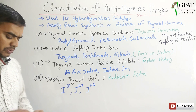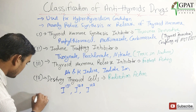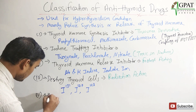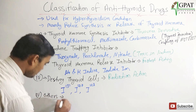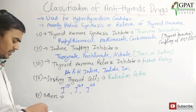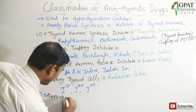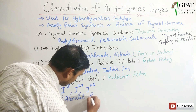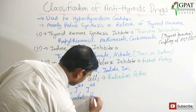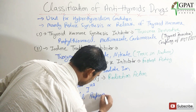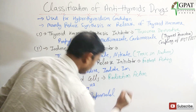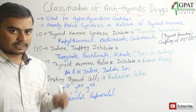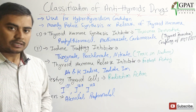Some additive drugs are also used in this category, having only additive action. Examples are atenolol and propranolol. This completes the classification of antithyroid drugs, which is very important. Thank you.